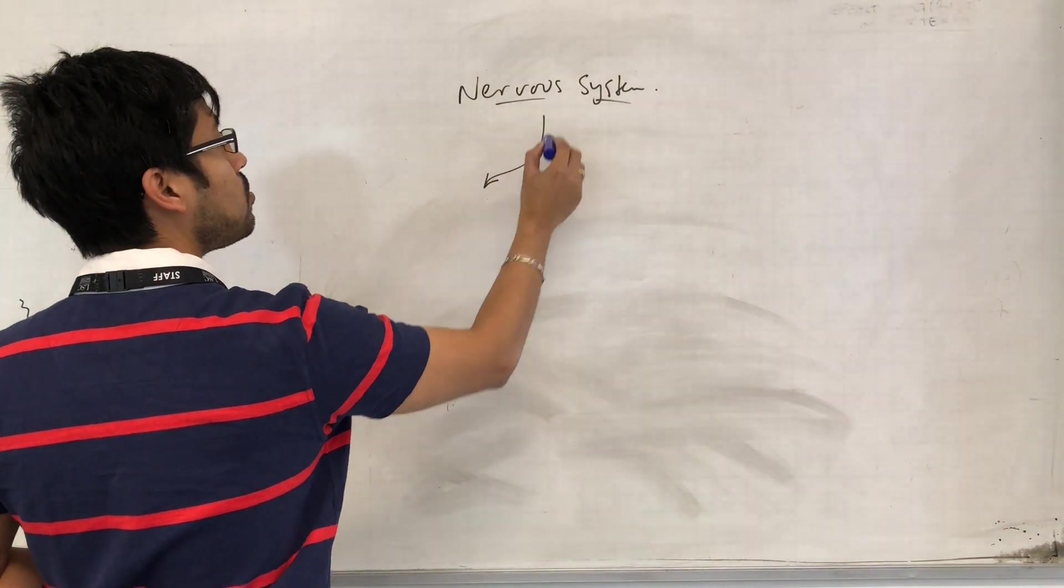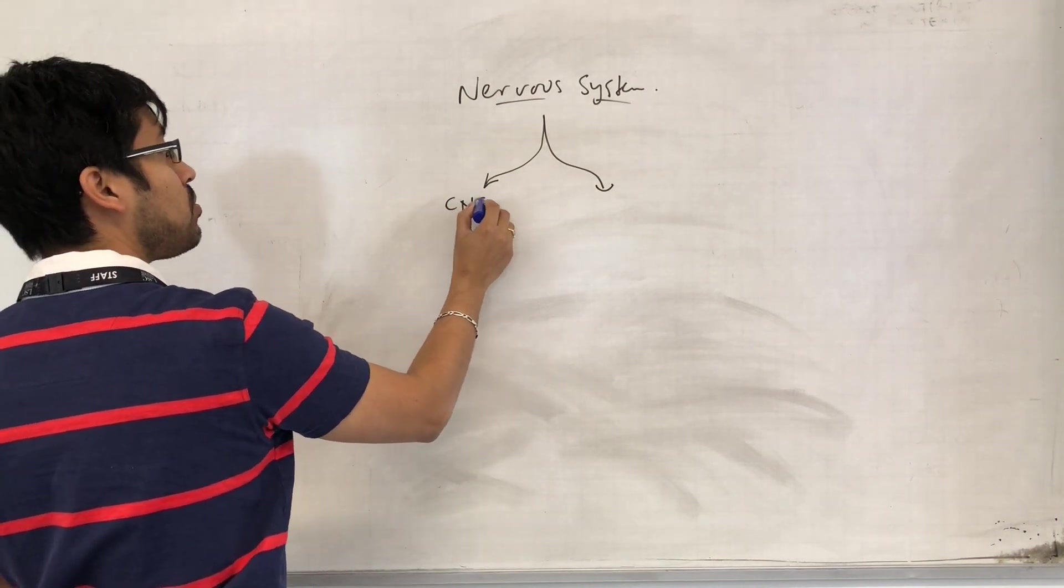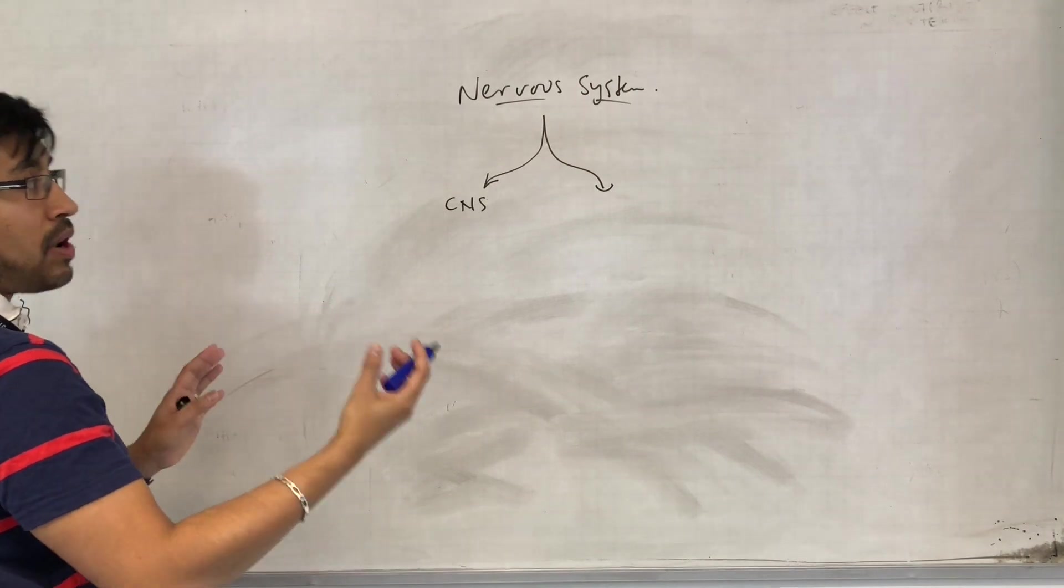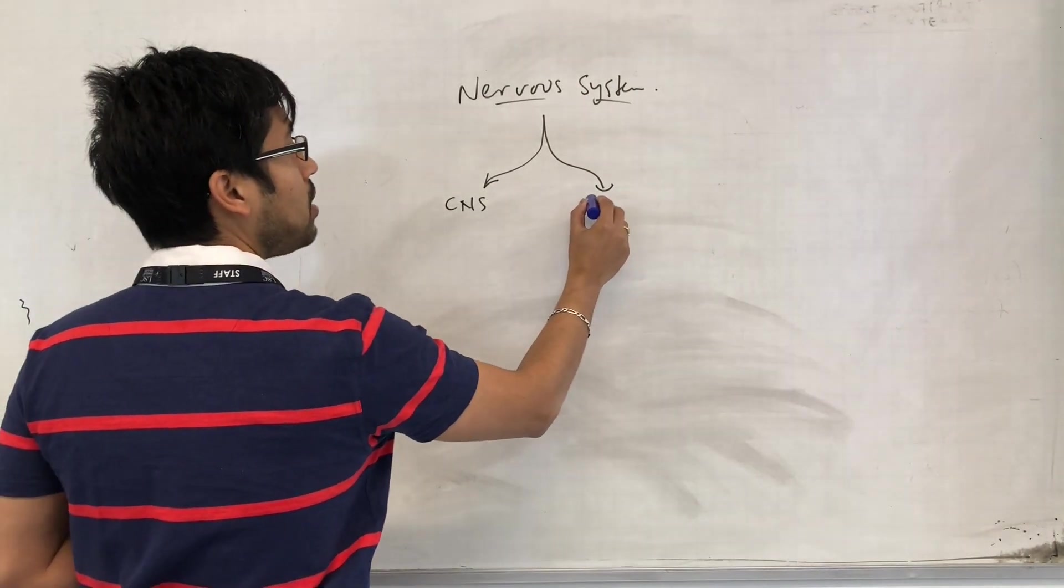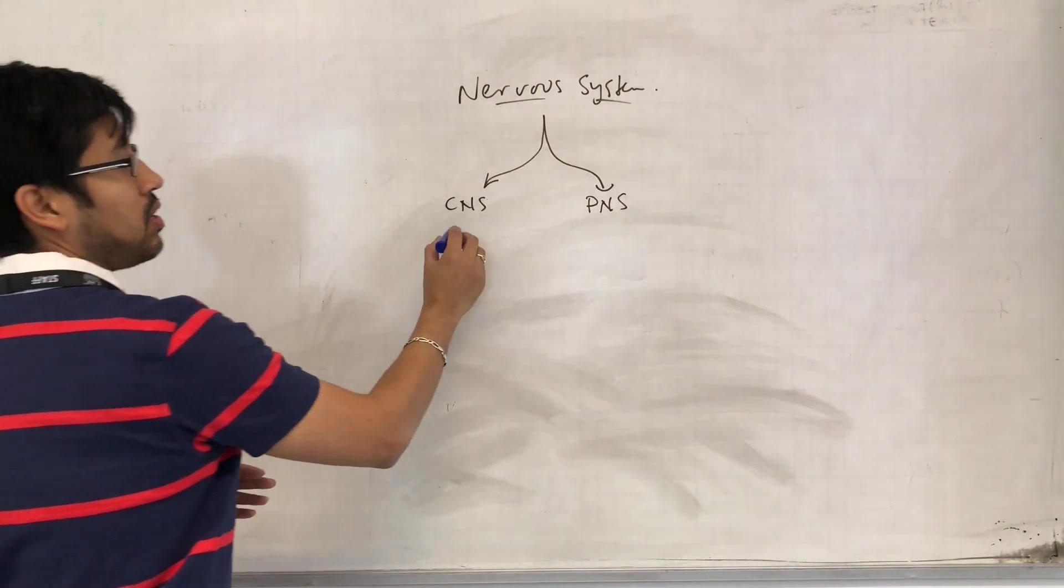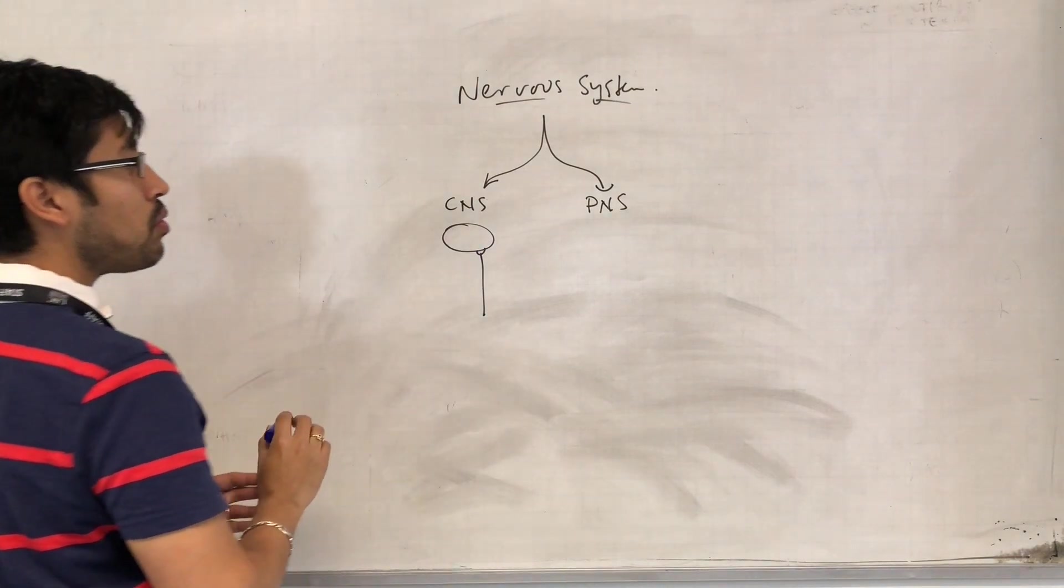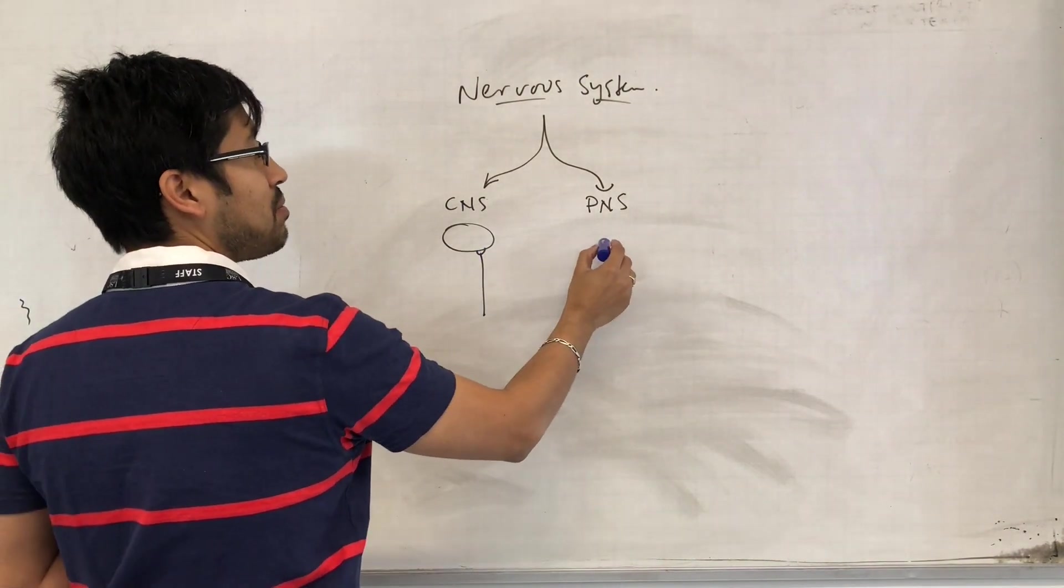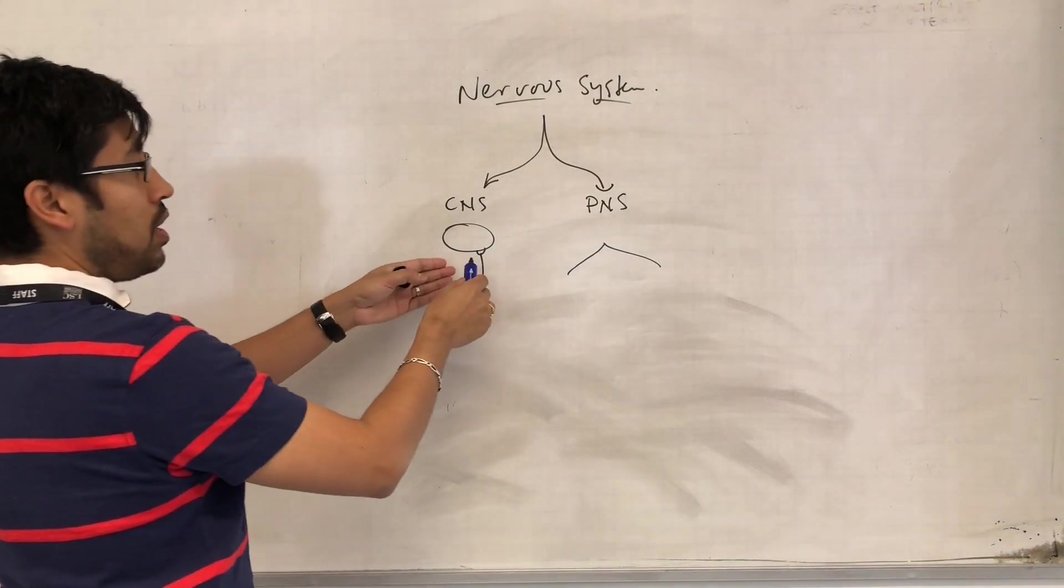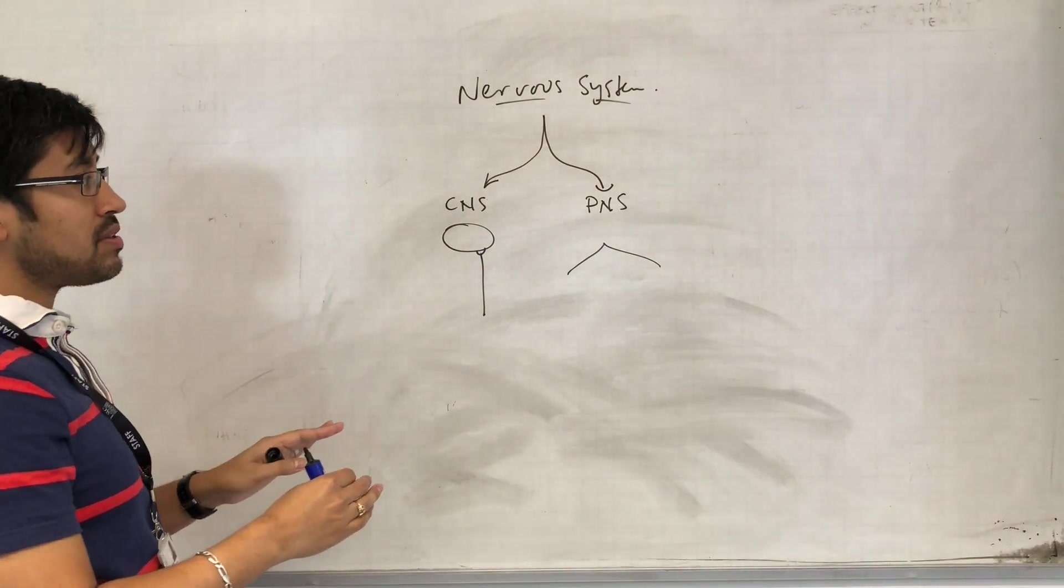The nervous system is divided into two parts. First is the central nervous system, which includes the brain and the spinal cord. Then you've got the peripheral nervous system, which is essentially all the neurons that allow communication between different parts of the body and the central nervous system.